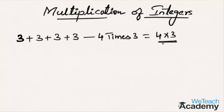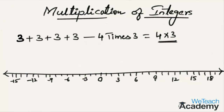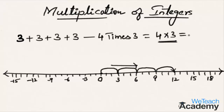Let me draw a number line to help understand. On the number line, integers include positive numbers on the right side from 0 and negative numbers on the left side from 0. Now, 4 times 3 is nothing but 4 jumps each of 3 steps from 0 towards the right on the number line. So we reach the number 12 — that is, 4 multiplied by 3 is 12.